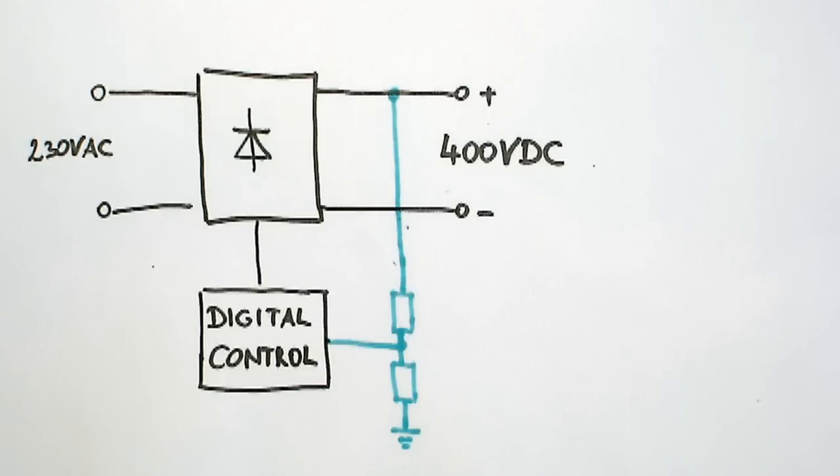To measure the loop gain of the voltage feedback loop, we insert a 100 ohm resistor on top of the feedback divider.